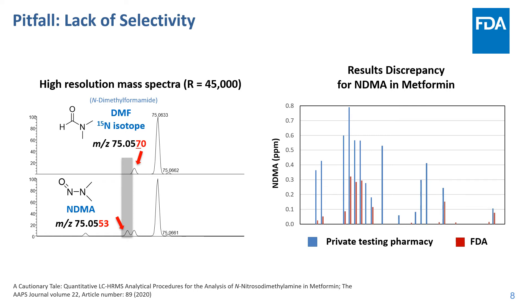With moderate LC separation, the method depends on the high mass resolving power of the mass spec to separate the nitrogen-15 isotopic peak of DMF from NDMA with an appropriate mass extraction window to achieve the needed selectivity for accurate quantitation of NDMA. A lower mass resolving power setting or wide mass extraction window would lead to the overestimation of NDMA, as shown in the bar graph where a private company's reported results, represented by the blue bars, were generally much higher than the FDA results, represented by the red bars, for the same samples.